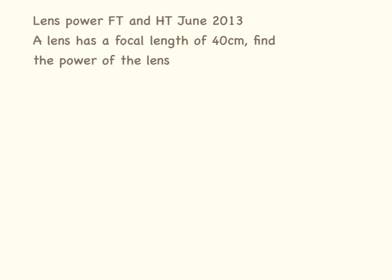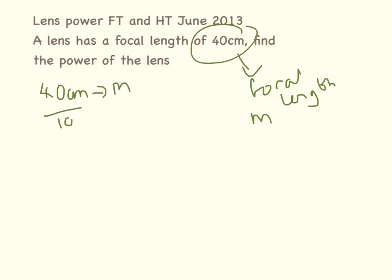So this is the question we have in front of us. Circle our numbers and that is the focal length. Now the focal length is normally measured in metres, so the first thing we need to do is convert 40 centimetres into metres. And we do that by dividing it by 100. So 40 centimetres is 0.4 metres.